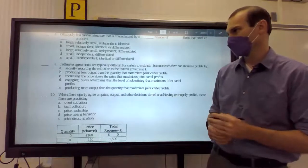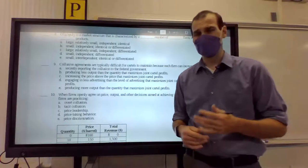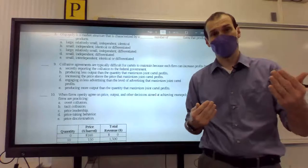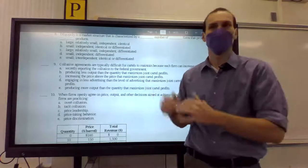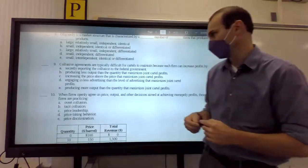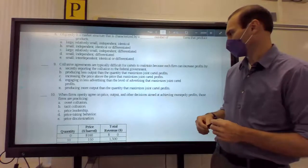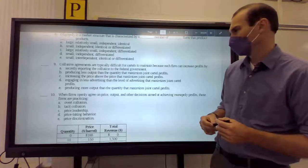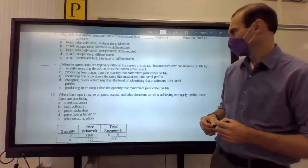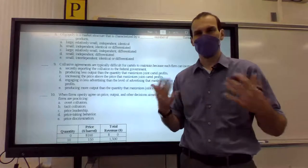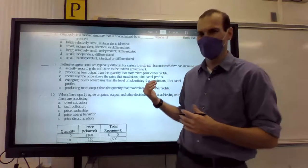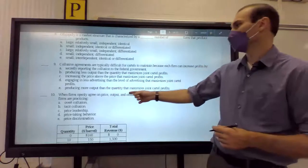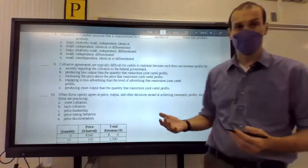Increase the price above the price that maximizes a joint cartel's profits. They can't do that alone. In fact, alone, they can only decrease prices. See, if an oligopoly in a cartel increases production, they'd have to lower the price to sell the extra production they've made. So engage in less advertising, the level of advertising maximizes joint cartel profits. That probably wouldn't increase profits because less advertising means less demand. But that's a weird one. The real best answer here is producing more output than the quantity that maximizes joint cartel profits.